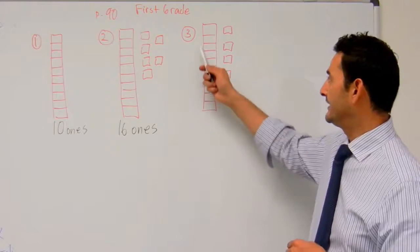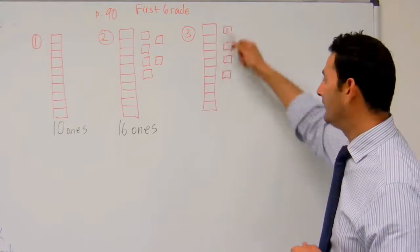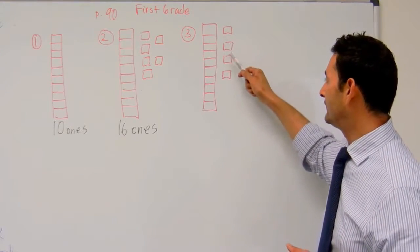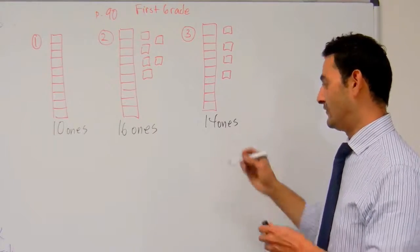And finally, let's take a look at number 3. Again, I know this is a bundle of 10. I don't have to count all of these. I know that's a 10. So let's count up: 10, 11, 12, 13, 14. So here I've got 14 ones.